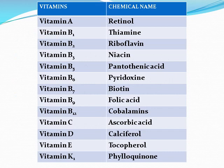Now let's sum up everything. Vitamins A, D, E, and K are fat-soluble. The rest — Vitamins B and C — are water-soluble. Vitamin A: retinol. B1: thiamine. B2: riboflavin. B3: niacin. B5: pantothenic acid. B6: pyridoxine. B7: biotin. B9: folic acid. B12: cobalamins. Vitamin C: ascorbic acid. Vitamin D: calciferol. Vitamin E: tocopherol. Vitamin K1: phylloquinone.